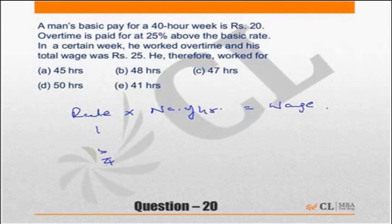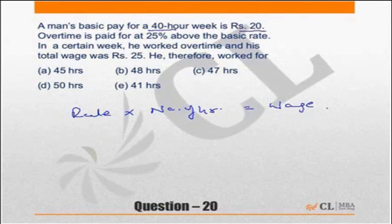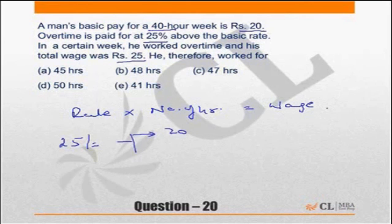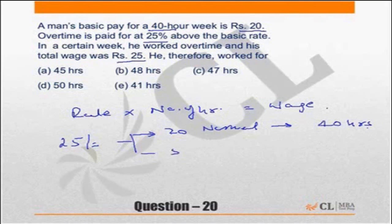So let's quickly solve this question. A man's basic pay for 40 hours is ₹20. Overtime is paid at 25% above the basic rate. He worked overtime and his total wage was ₹25. Out of ₹25, ₹20 is the normal time pay for which he worked 40 hours. The balance is ₹5, which is the overtime pay on top.